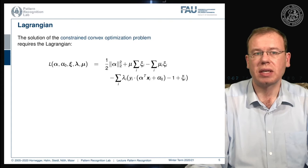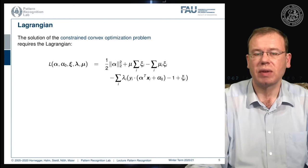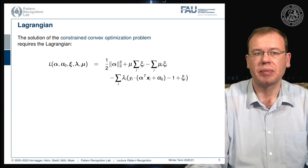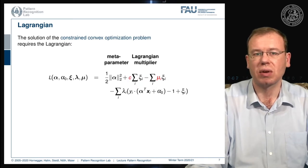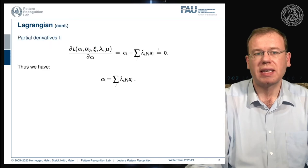Now let's set this up in the Lagrangian. The solution of the constrained convex optimization problem requires a Lagrangian function containing the squared norm of the normal vector, plus μ times the sum over the ξᵢ's, minus the sum over μᵢξᵢ, and minus the sum over our constraints employing λ. We can map μξᵢ into a meta-parameter C, treating it as a constant and removing it from the optimization, leaving us with Lagrange multipliers μᵢ and λᵢ.